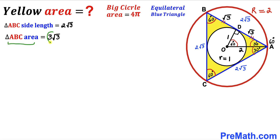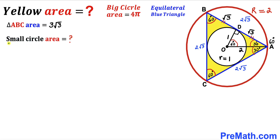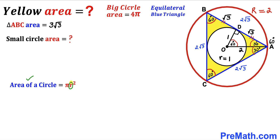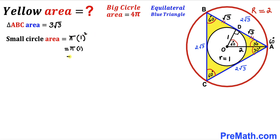Next, we calculate the area of the smaller circle using area = πr², where lowercase r = 1. So the area = π × 1² = π. Therefore the area of the smaller circle is π square units.